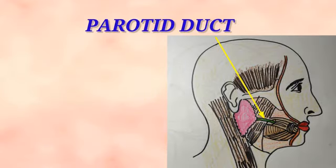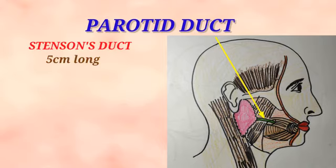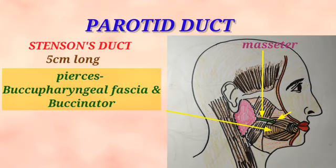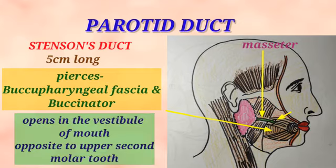The parotid duct is also called Stensen's duct and is 5 cm in length. The duct emerges through the anterior border of the gland and first passes forward on the masseter muscle. As it reaches the anterior border of the masseter, it abruptly turns medially through the buccal pad of fat and then pierces the buccopharyngeal fascia and the buccinator muscle. The duct then passes obliquely between the buccinator muscle and the mucous membrane of the cheek, and finally opens in the vestibule of the mouth opposite to the crown of the upper second molar tooth.